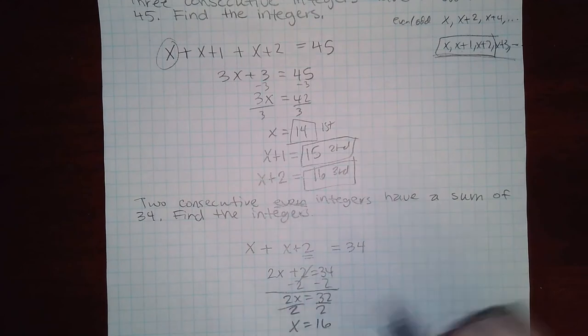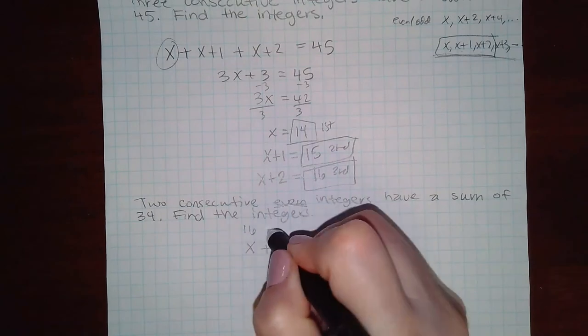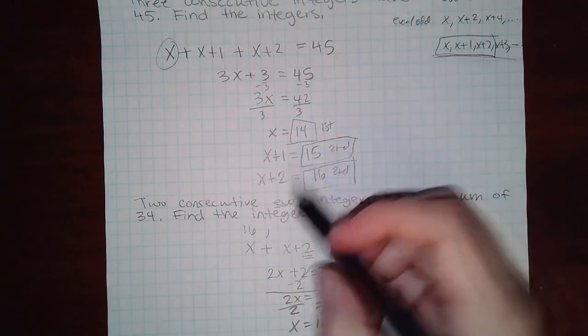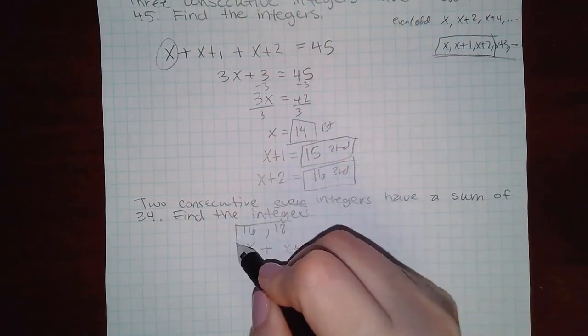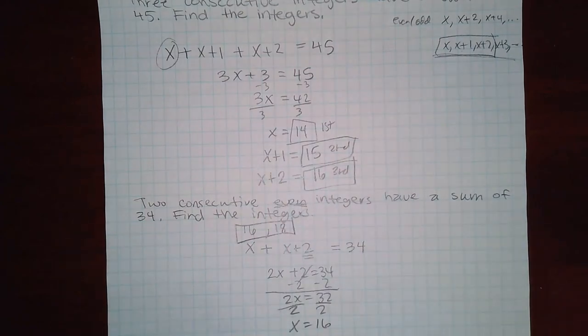We get 16 so the first number is 16 and then 16 plus 2 is 18 and so the two numbers are 16 and 18.